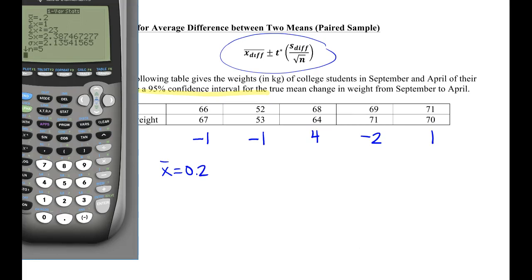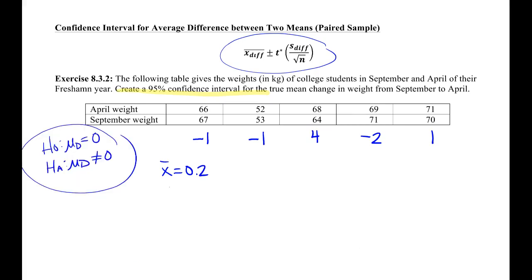And our standard deviation is 2.3875. And we know our N was equal to 5. We had 5 people in the sample.